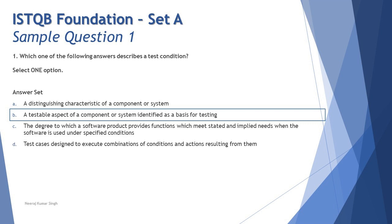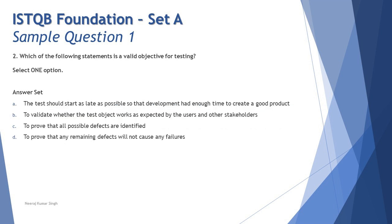The right answer is B — 'the testable aspect of a component or system identified as a basis of testing.' Once you understand this, you'd hardly spend 30 seconds to answer such questions. That's why people tell me they finished the paper in 30 minutes and it was a piece of cake — because you know the content and tips well.